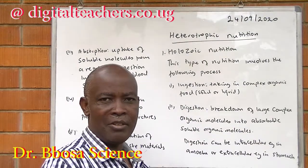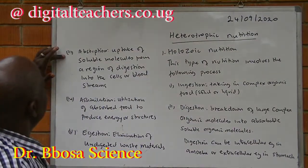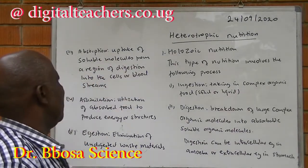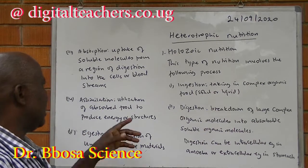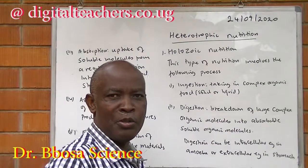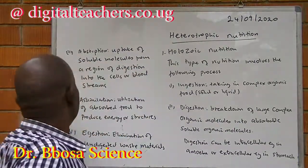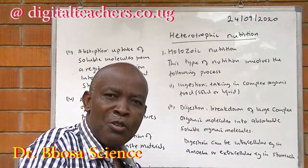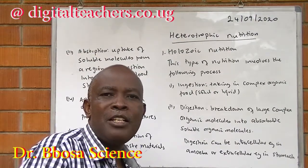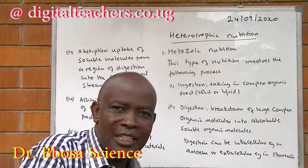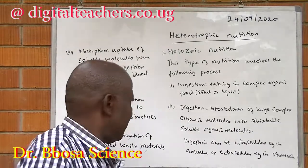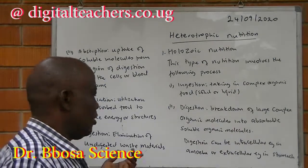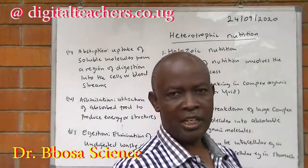Then absorption takes place into the cells and bloodstreams. Three, absorption: movement of soluble molecules from the region of digestion into the cells and bloodstreams. In man, absorption occurs in the small intestine. Four, assimilation: utilization of absorbed food to provide energy and materials to build the organism. Five, egestion: elimination of undigested food. In man, we call it defecation — undigested food is defecated.